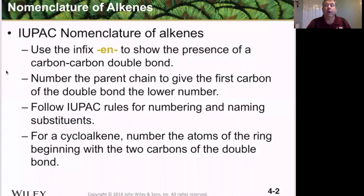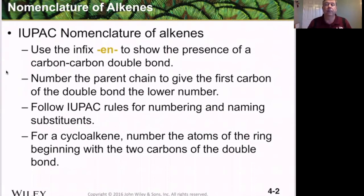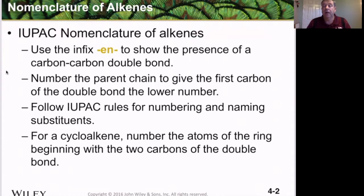Using the IUPAC name system, we are going to use the infix 'ene' to show the presence of a carbon-carbon double bond. For alkynes, the 'e' at the end just means we have a hydrocarbon. We can have other things at that end, like an 'ol' or an 'amine,' depending on what kind of functional groups we have. The parent chain must contain both carbons of the double bond, and we number it from the point where the double bond has the lowest number possible. For a cycloalkene, the double bond always starts at positions 1 and 2.